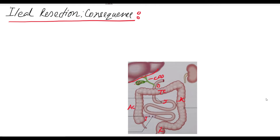Suppose any patient has undergone ileal resection — that is, the ileal part of the small gut has been resected. Then what will be the consequence for this patient in the long run? First, what is the role of the ileum? In the ileum, absorption of bile acid and bile salt occurs, as well as absorption of vitamin B12.